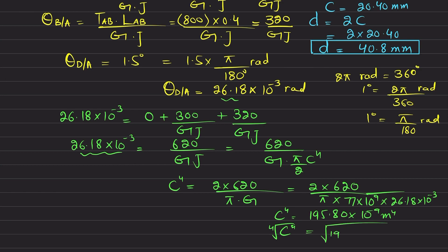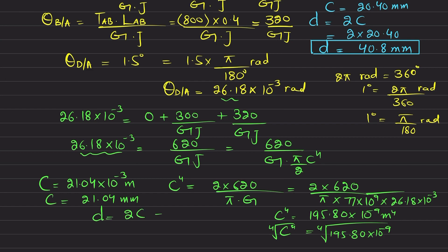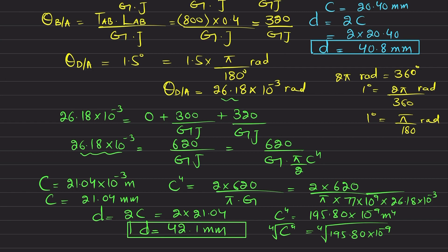Taking the fourth root: c = (195.80 × 10⁻⁹)^(1/4) = 21.04 × 10⁻³ m = 21.04 mm. Therefore, the diameter based on the deformation constraint is d = 2c = 2 × 21.04 = 42.1 mm.